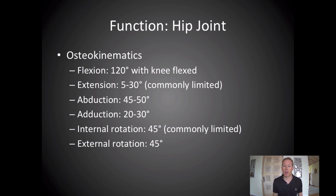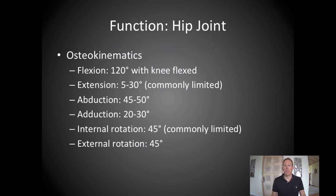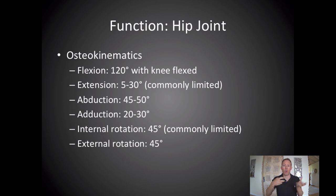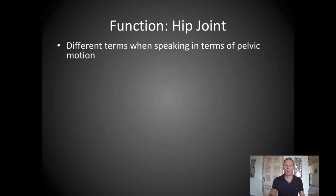Internal rotation is an area we sometimes work on and mobilize with people who have hip joint-related pain. Those are the six motions available at the hip — just like the shoulder. Both ball and socket joints have flexion, extension, abduction, adduction, and internal and external rotation. These movements have to do with the ball of the hip joint moving inside the socket. But we could also think about the socket moving on the ball — which is the pelvis moving — and that gives us concepts like anterior and posterior pelvic tilt.